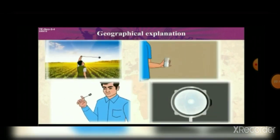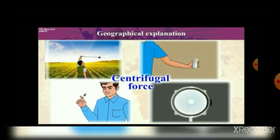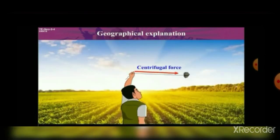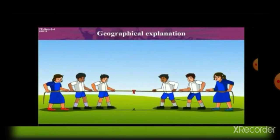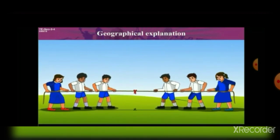Let us understand centrifugal force. In all these activities, we observe centrifugal force. Centrifugal force acts in the direction opposite to the Earth — that means away from the center. Even when we are sitting in a ferry wheel at a fair, our seat is spinning and we lean outwards — that is also an effect of centrifugal force. Even in tug of war, we pull in the opposite direction, and that is centrifugal force.